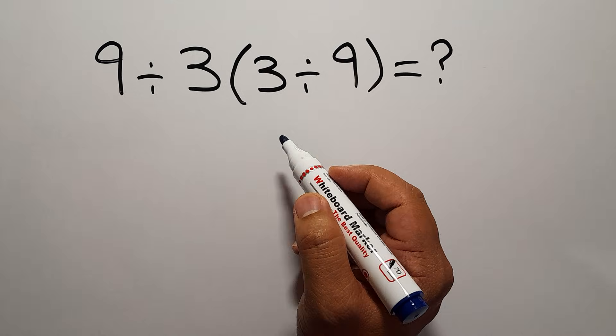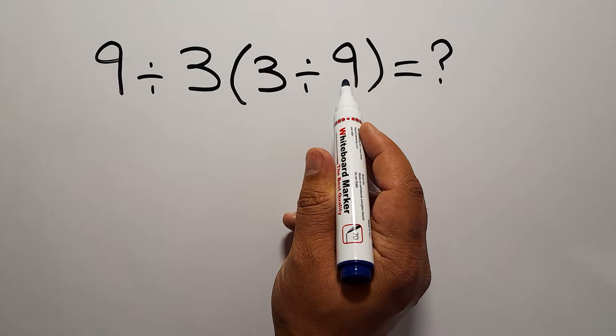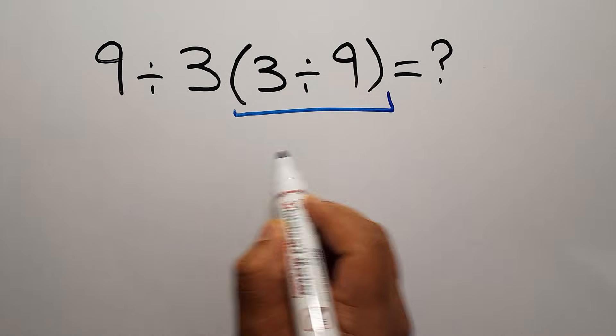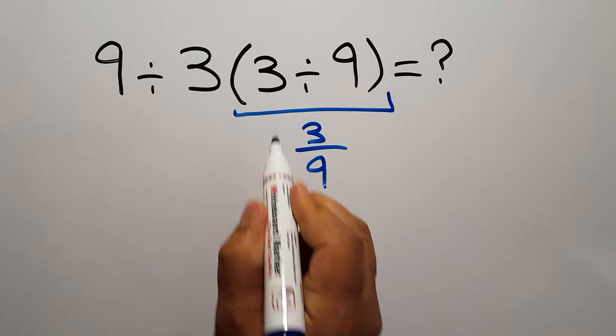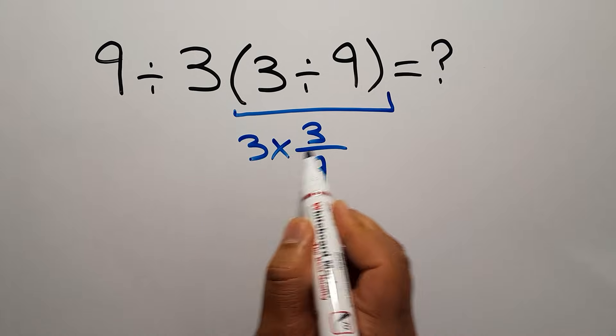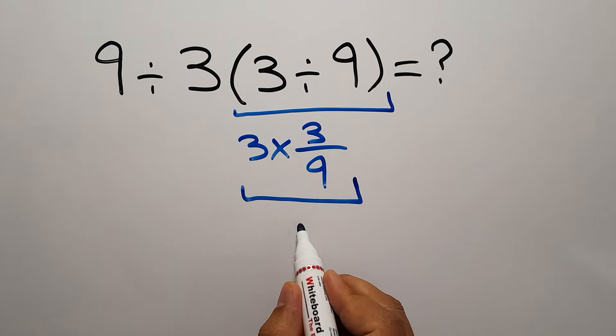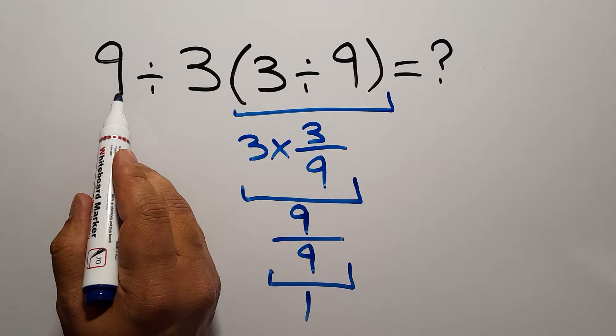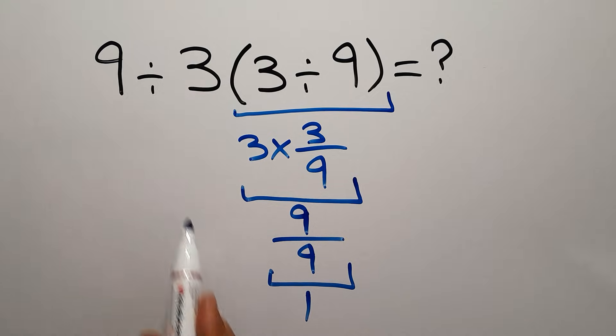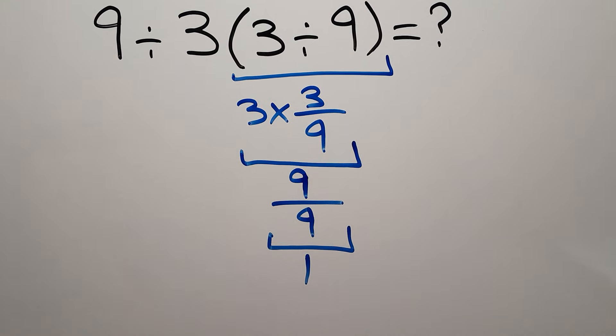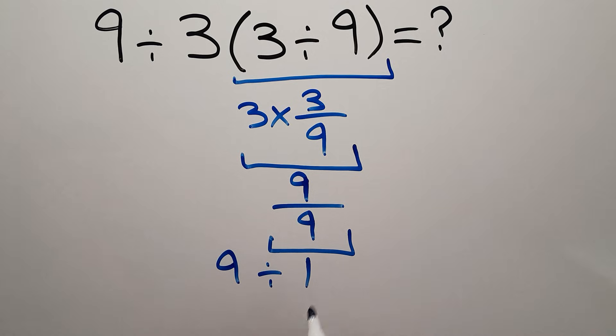Are you ready to solve? Let's go down and start it. 3 divided by 9 can be written as 3 over 9. And here we have 3 times 3 over 9, which equals 3 times 3 gives us 9. And 9 over 9, which equals 1. And here we have 9 divided by this. That means 9 divided by 1, which equals 9.